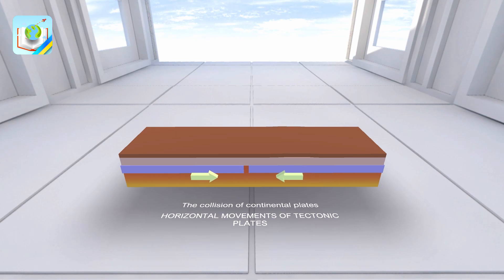When two tectonic plates collide, their edges fold into folds, as a result of which mountains are formed. For example, the Himalayas arose at the junction of the Eurasian and Indo-Australian plates.